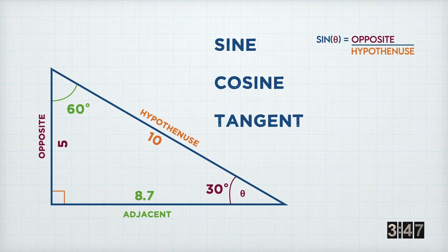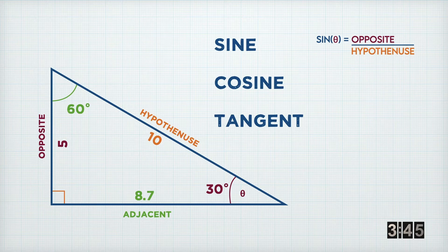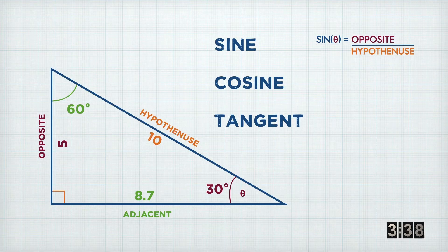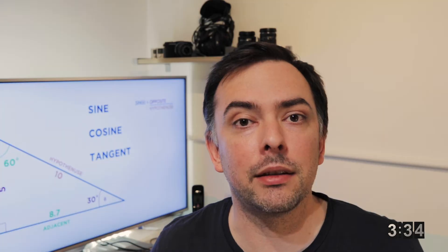On our triangle, the angle that we're interested in is 30 degrees. If you, on your scientific calculator, type in sine 30, you'll come out with 0.5. Now, if you look at the triangle that we've got, 5 divided by 10 is 0.5. So we can see that this is true.